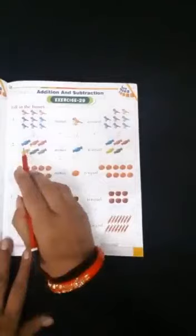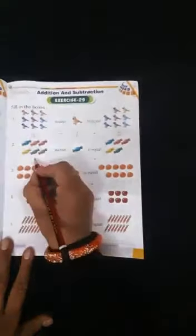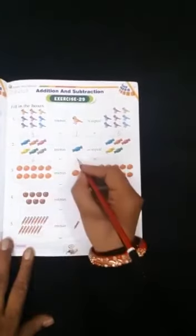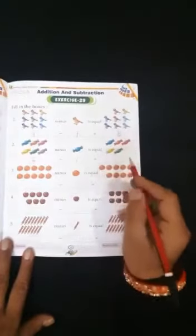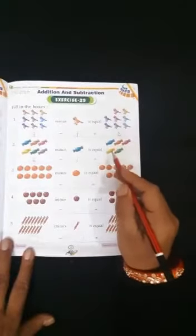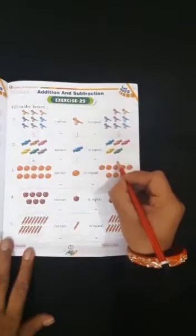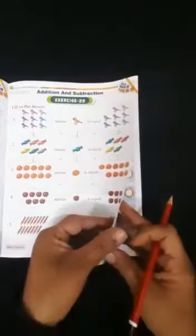How many chocolates are here? 1, 2, 3, 4, 5, 6. 6 minus 1, 1 chocolate is eaten. 1, 2, 3, 4, 5. So we will write here 5. In this manner you should complete the remaining exercise.